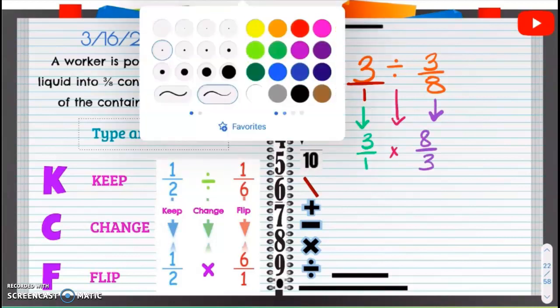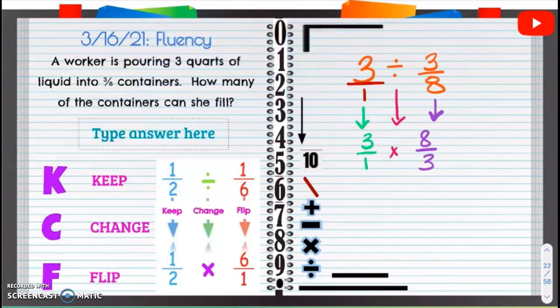Now we're going to multiply straight across. Three times eight equals 24. And then one times three equals three. Now 24 divided by three equals eight. If we do 24 divided by three, that equals eight.